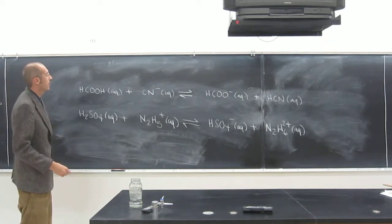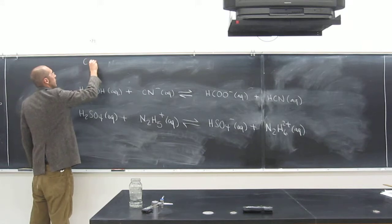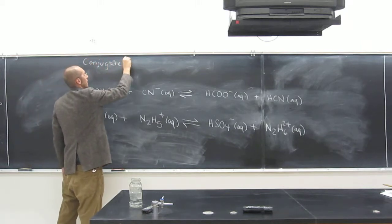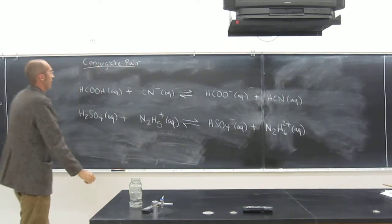If you look at these two reactions, what we're trying to do is find the conjugate pairs and determine which one is the conjugate acid, which one is the conjugate base, and which one is the acid and the base.